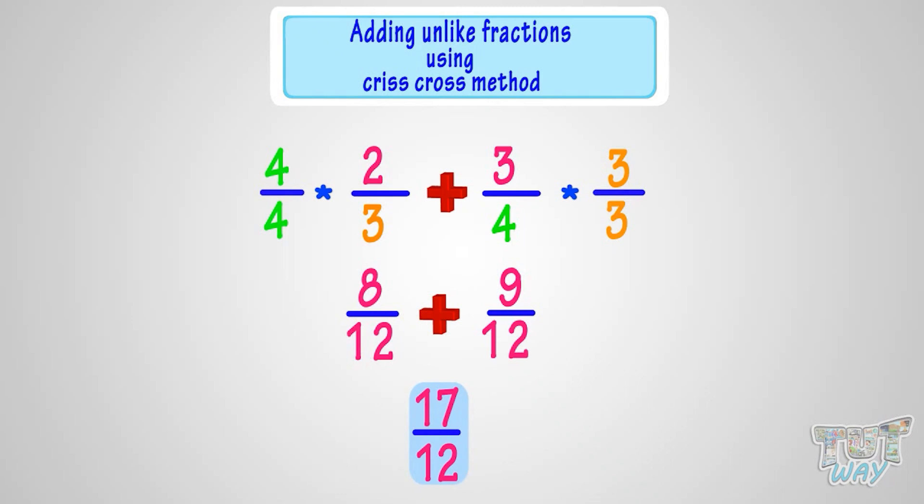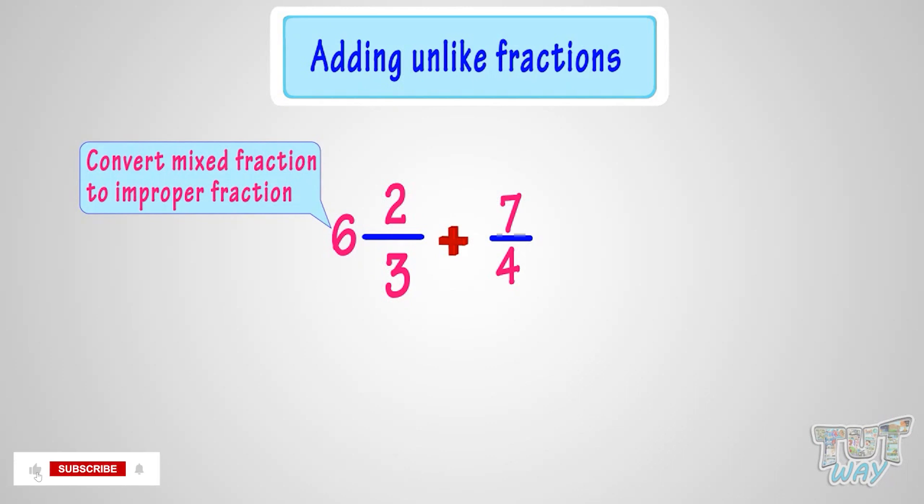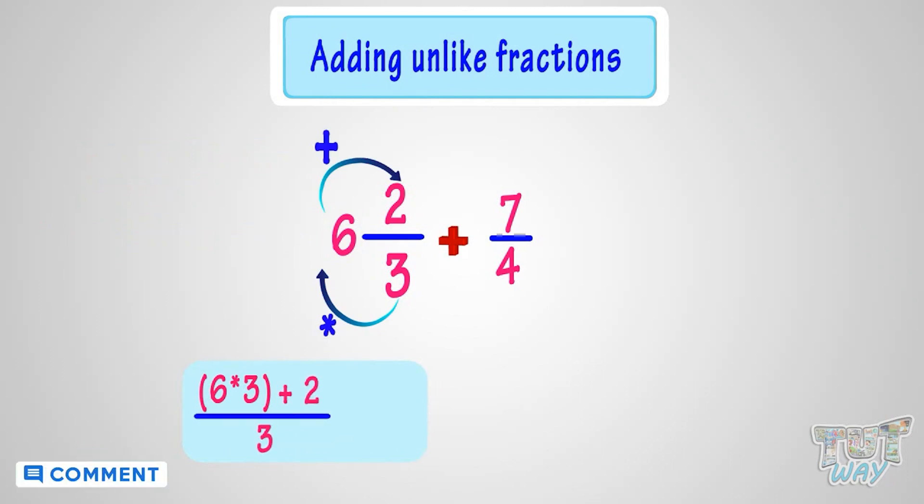Now let's take another example. We have to add these two fractions: 6 2 by 3 plus 7 by 4. Here one of the fractions is a mixed fraction. So first we convert the mixed fraction to an improper fraction. We multiply the whole number with the denominator and add numerator to it. Denominator remains the same.